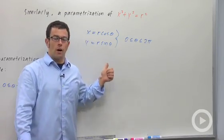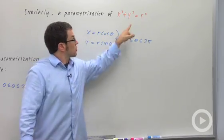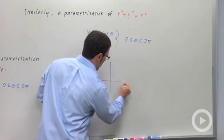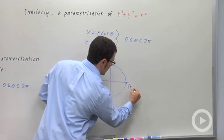And again, this will be a counterclockwise parametrization of the circle with radius r, starting at that right-hand point (r, 0), so starting right there.